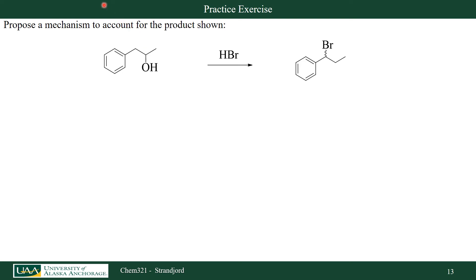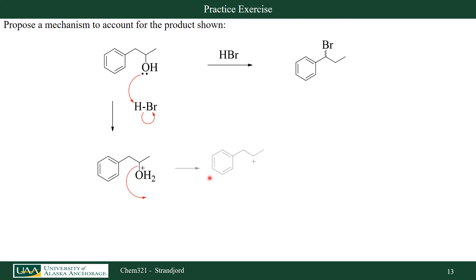Let's propose a mechanism that accounts for the product shown. Here I have a secondary alcohol where my hydroxyl group is on the second carbon next to the aromatic ring. In my product, the bromine is on the first carbon next to the aromatic ring, so I'm suspecting a rearrangement has occurred — meaning I'm proceeding via an SN1 reaction. The first thing that happens is I protonate my hydroxyl group to make it a good leaving group; it leaves to form a carbocation. There are two hydrogens right next to it, and a 1,2-hydride shift forms a benzylic carbocation, which is more stable than a secondary carbocation.